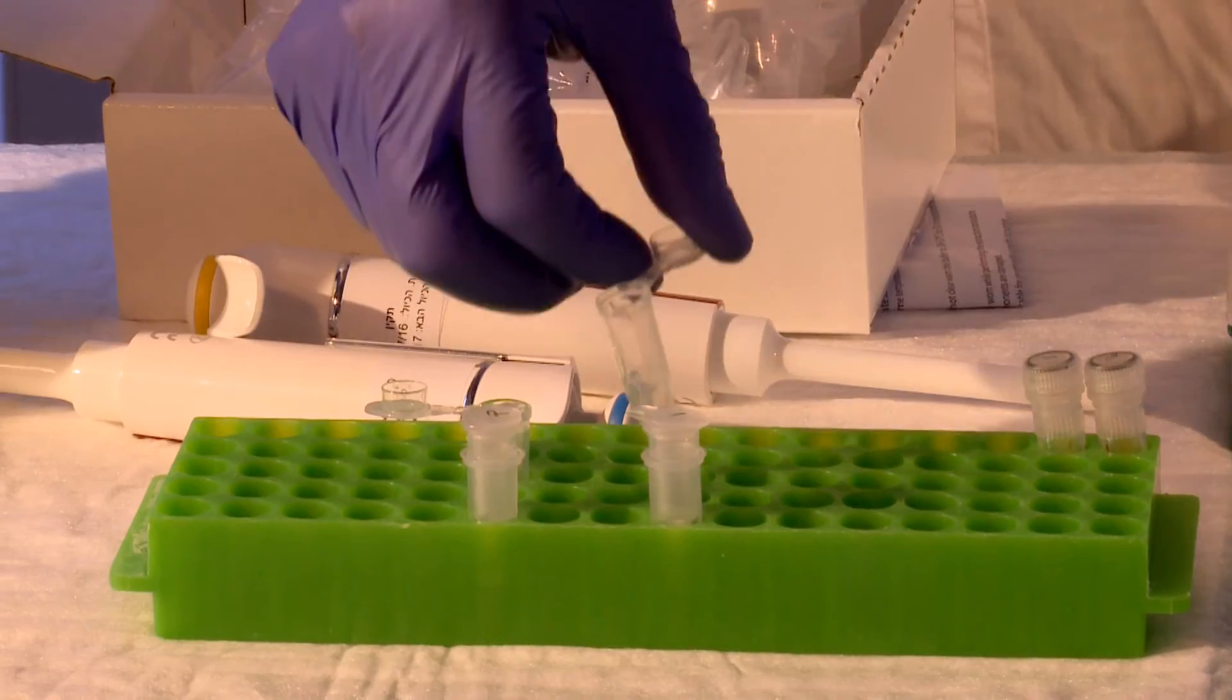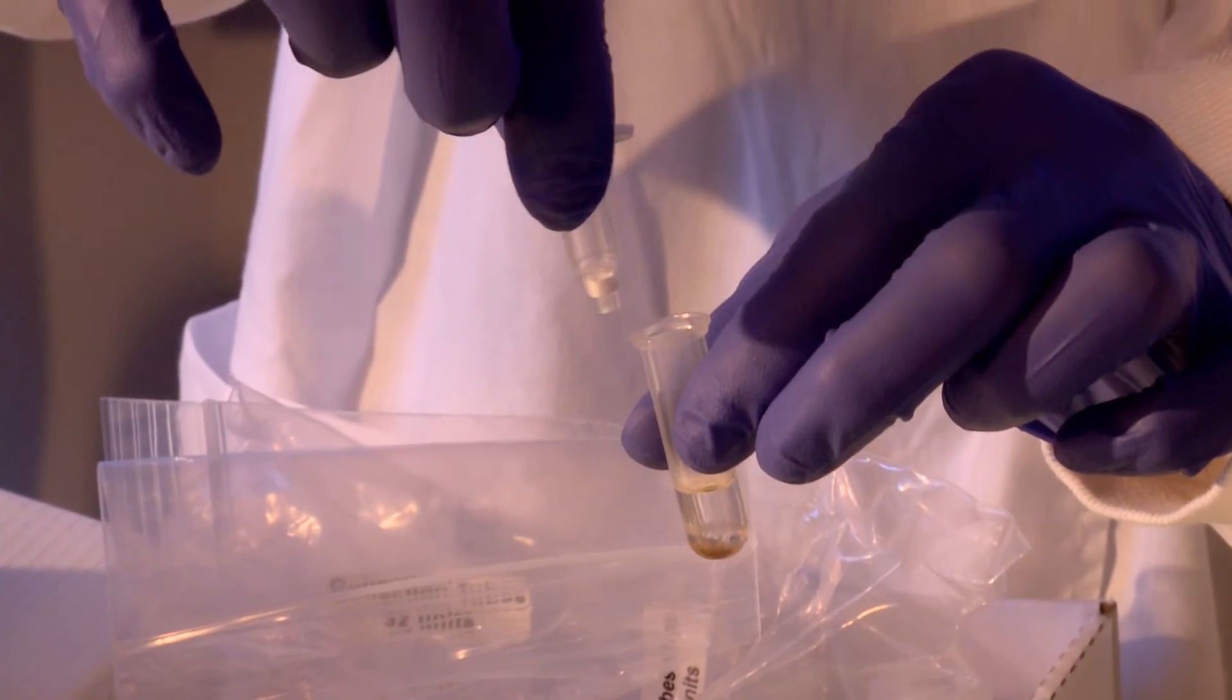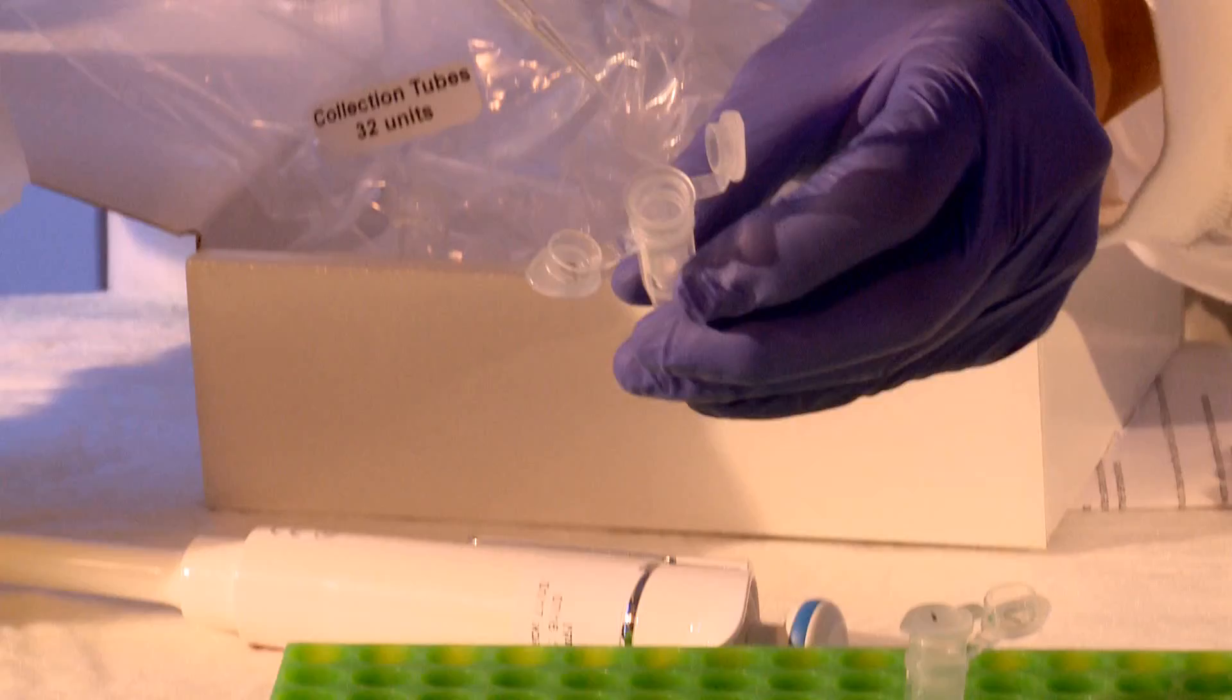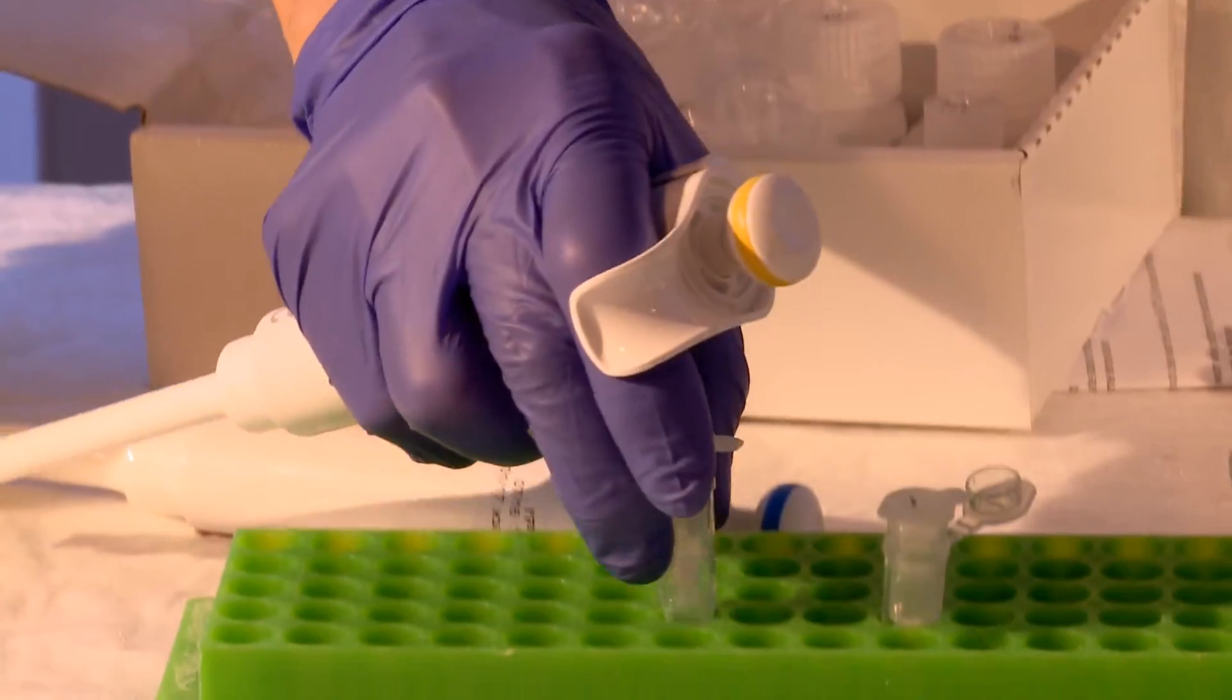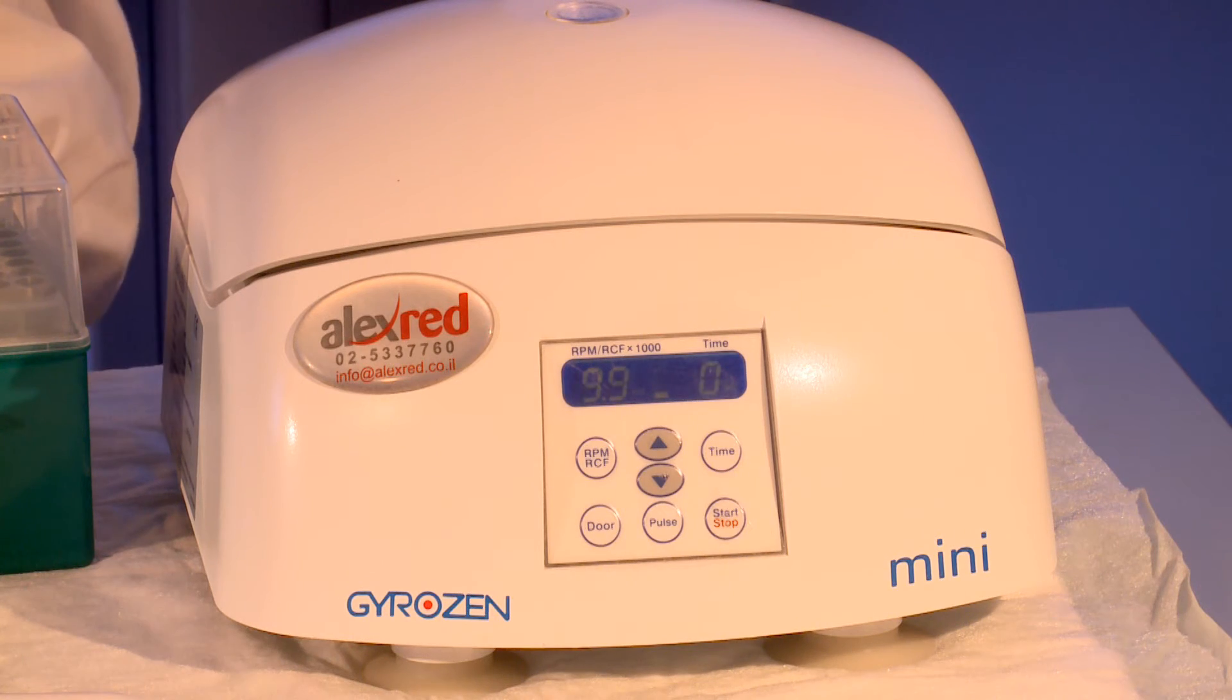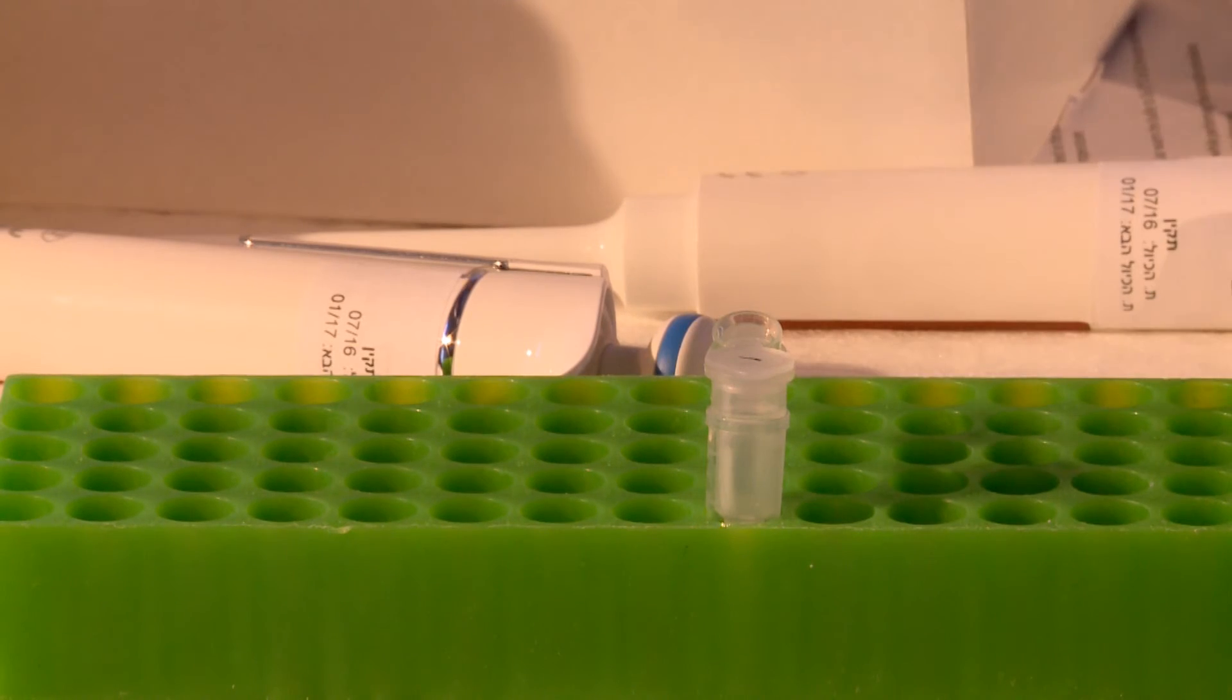Carefully transfer the spin column to a clean 1.5 milliliter tube. Add 50 microliters of buffer D to the spin column and allow to incubate at room temperature for 2 minutes. Centrifuge at 10,000 G for 30 seconds. The DNA is released into the tube.